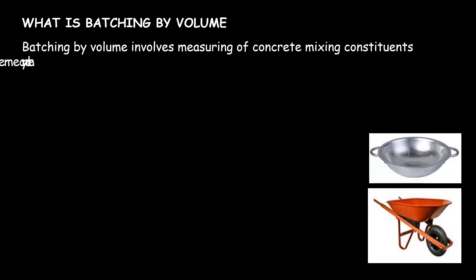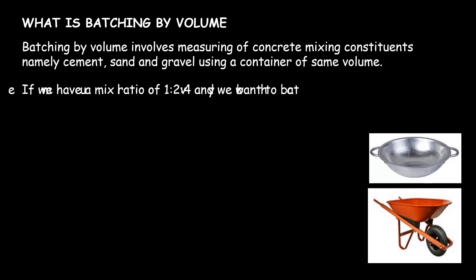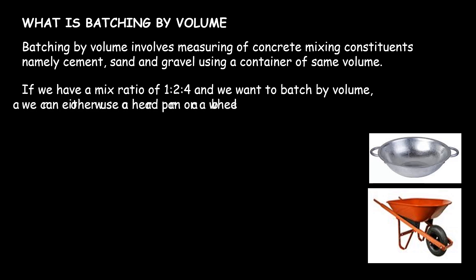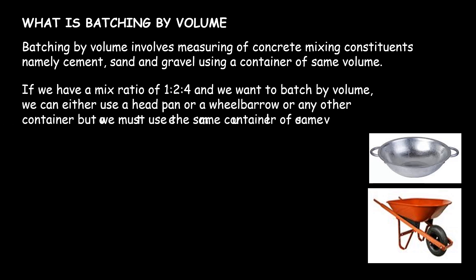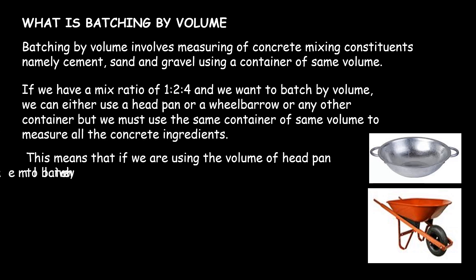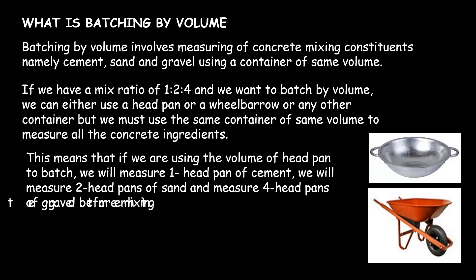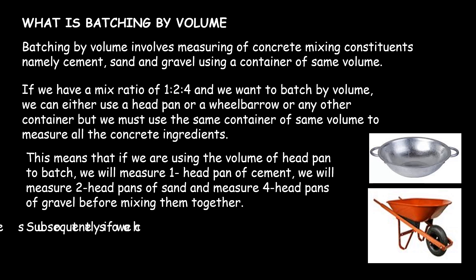Batching by volume involves measuring of concrete mixing constituents — namely cement, sand, and gravel — using a container of the same volume. If we have a mix ratio of 1:2:4 and we want to batch by volume, we can either use a headpan, a wheelbarrow, or any other container, but we must use the same container to measure all the concrete ingredients.